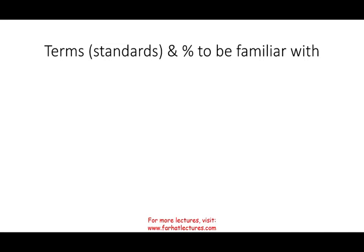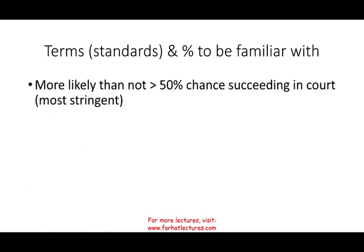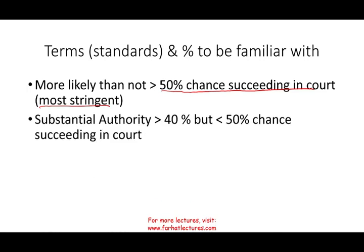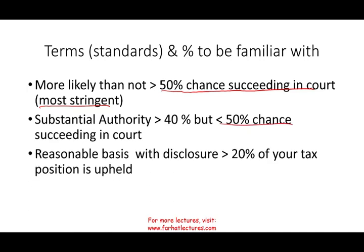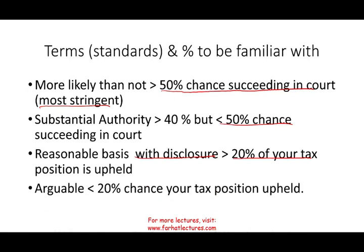You need to be familiar with certain percentage standards. 'More likely than not' means you have more than 50% chance of succeeding in court — this is the most stringent standard. 'Substantial authority' means you have more than 40% but less than 50% chance of succeeding in court. 'Reasonable basis with disclosure' means you disclose the position and have more than 20% chance of your position being upheld. 'Arguable' means you have less than 20% chance of your position being upheld in court.